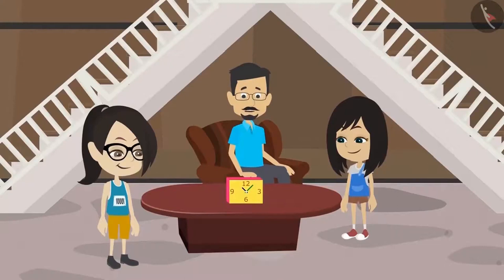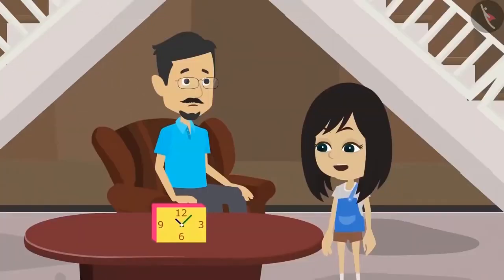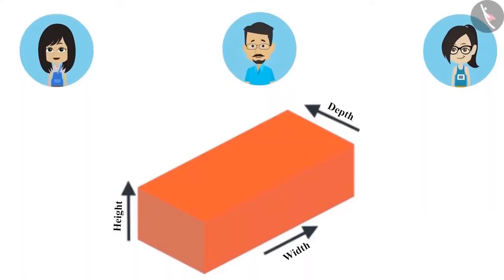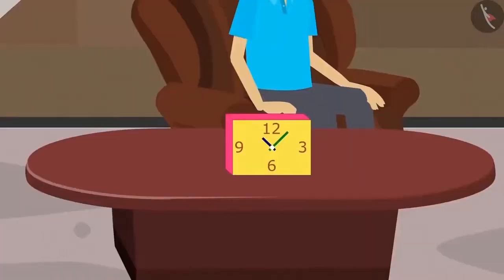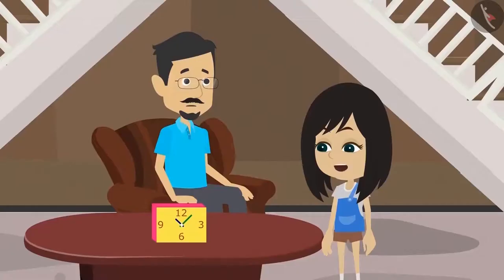Vandana, how is this happening? The clock appears three dimensional. Those are width, height and depth. Yes, we had learned this while learning about bricks. To measure bricks, we use three dimensions. And because of these three dimensions, an object appears to be having different shapes when viewed from different sides. For example, when you look from the top, the clock looked like a rectangle, but when you saw from the front, you could see a clock.